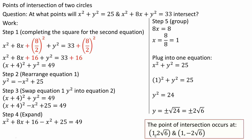So the points of intersection are (1, 2√6) and (1, -2√6).